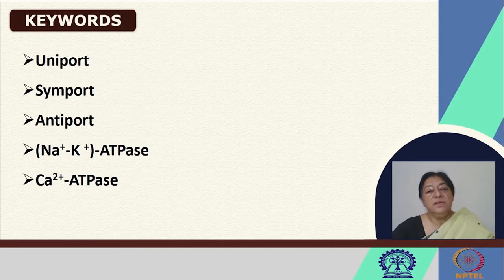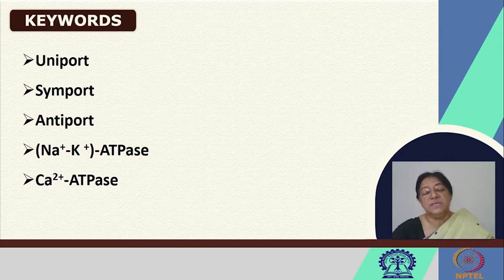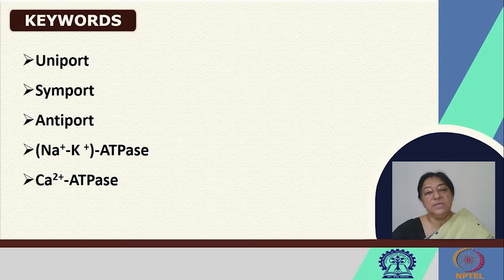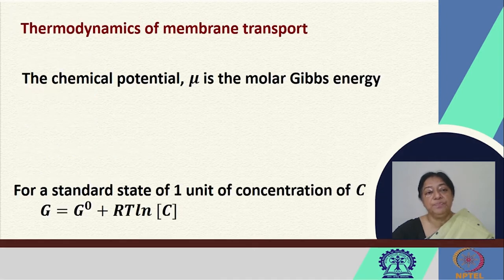There are several terminologies that we will come across: a uniport, symport, and antiport, which we have previously looked at in the earlier lecture. Then we will look at ATPase-type proteins and how they can transfer sodium, potassium, and calcium ions across the membrane.